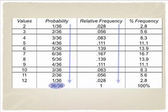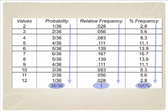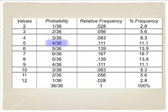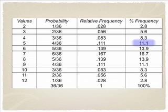If we use relative frequency, which is when we divide those numbers out, everything adds up to 1. Then we have percent frequency, which adds up to 100%. All three ways are essentially the same way of expressing relative probability. So probability can be represented as 4 over 36, relative frequency as .111, or percent frequency as 11.1. All of these represent the chance of getting a 5.